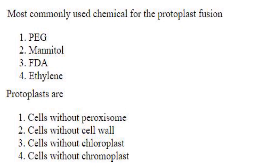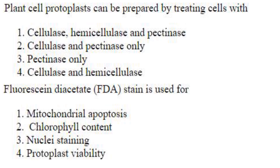The most commonly used chemical for protoplast fusion is PEG — polyethylene glycol. Protoplasts are cells without a cell wall. The answer is option 2. Plant protoplasts can be prepared by treating cells with cellulase, hemicellulase, and pectinase, which will dissolve the cell wall and yield the protoplast. The answer is option 1.